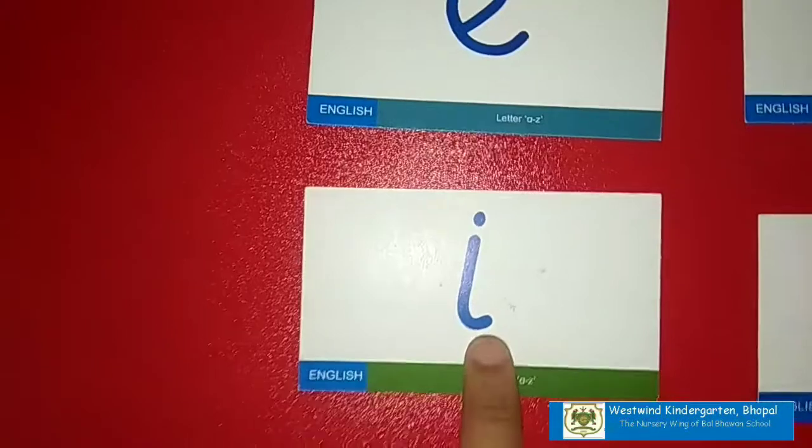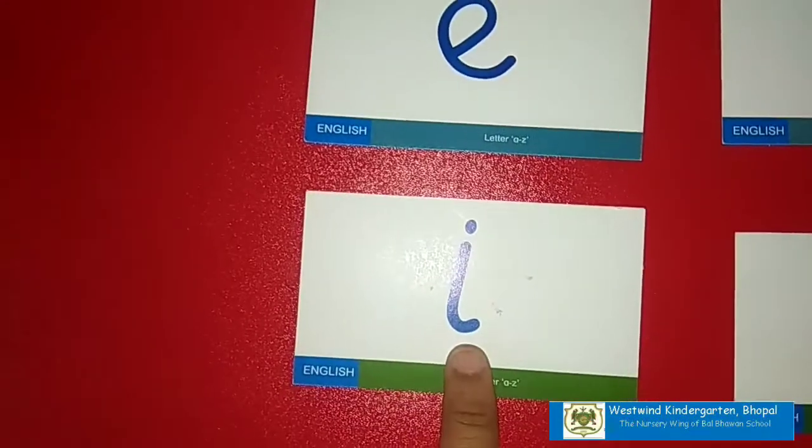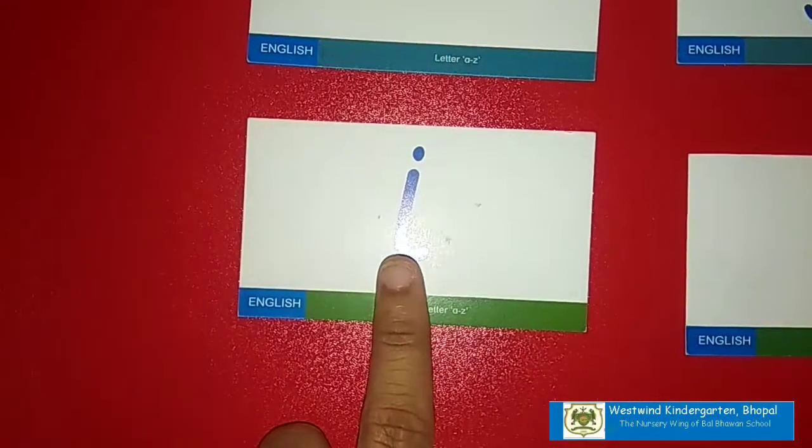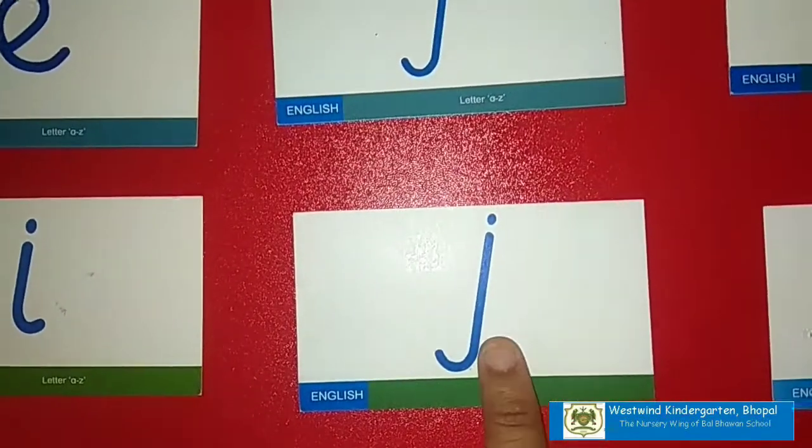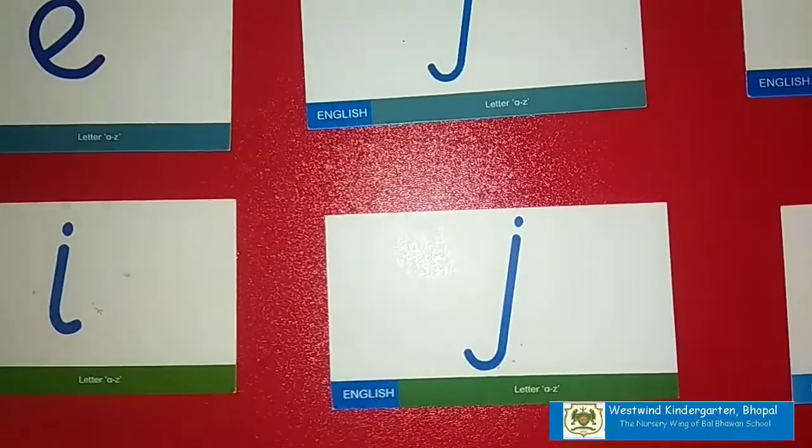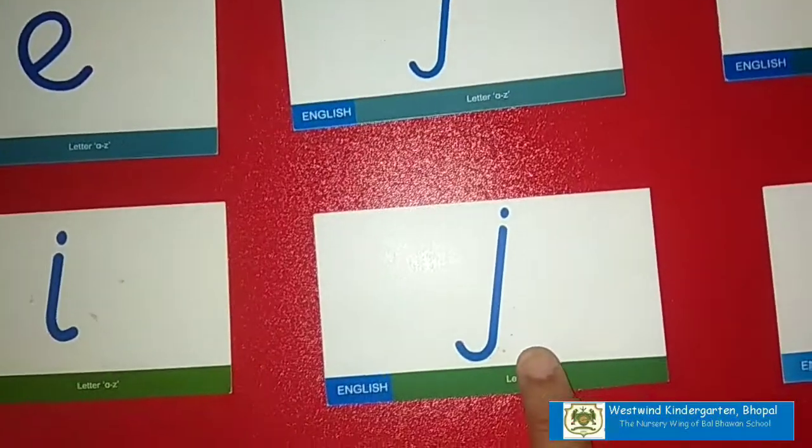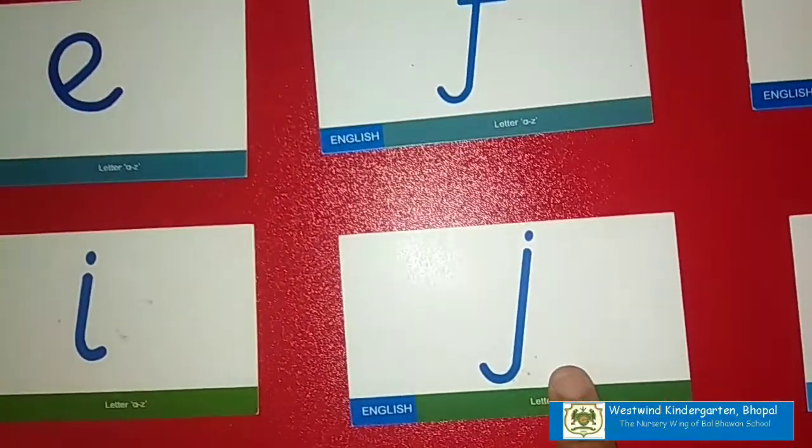Letter I. Sound of letter I is E. Next is J. Sound of letter J is J.